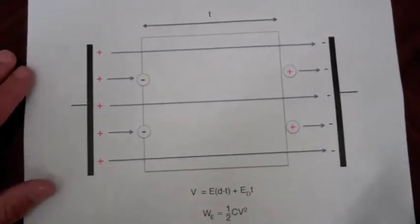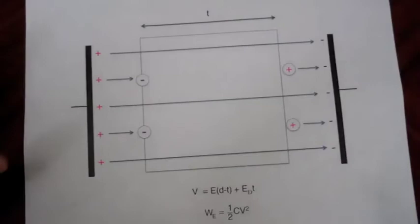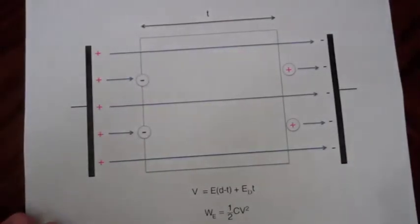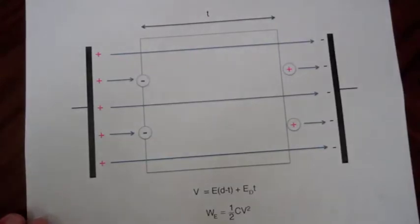If you work it out, you would find that the net result is that there is a lower stored energy when you have the dielectric inside the capacitor with the same charge on the plates.